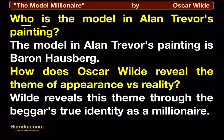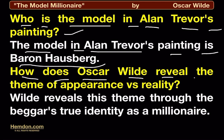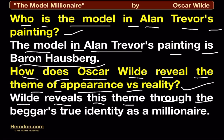Who is the model in Alan Trevor's painting? The model in Alan Trevor's painting is Baron Hausberg. How does Oscar Wilde reveal the theme of appearance vs reality? Wilde reveals this theme through the beggar's true identity as a millionaire.